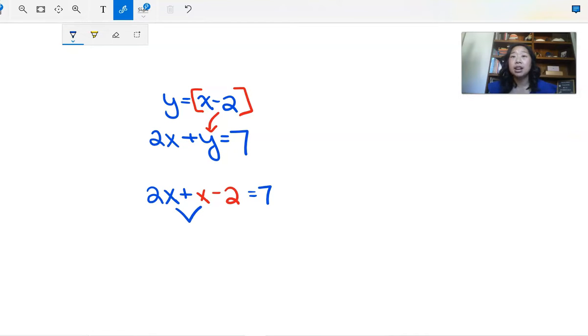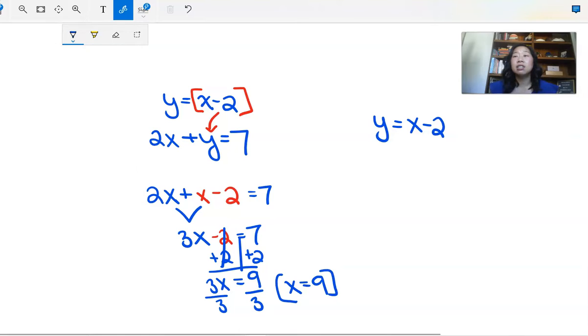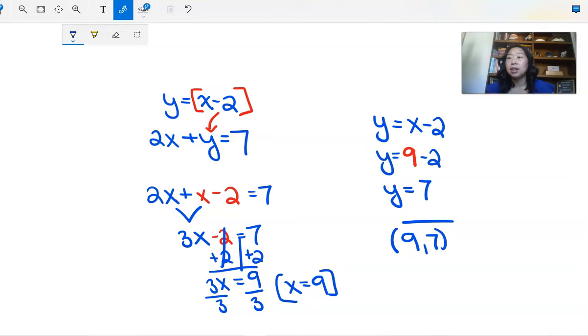So now we can just simplify. 2x plus 1x is 3x, and then we still have minus 2 and then equals 7. So then now I'm going to add 2 over here. And I get 3x equals 9 and then divide by 3. So x is going to equal 3. So now I can go back into my original equation, which is y equals x minus 2. And I'm going to plug in the 3 for x. So I got y equals, copy everything else down, and then I'm going to have 3 minus 2. And 3 minus 2 is 1.